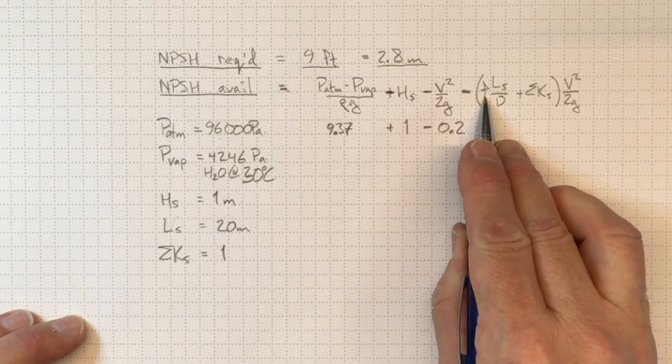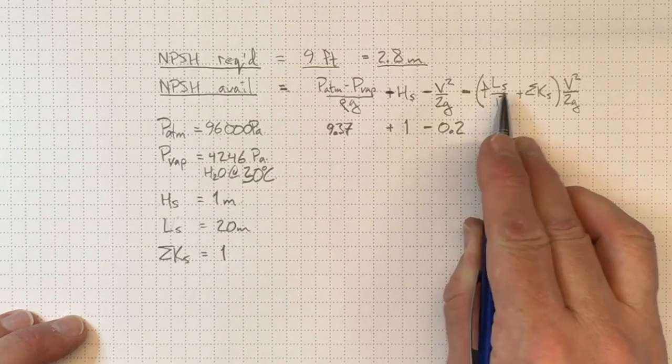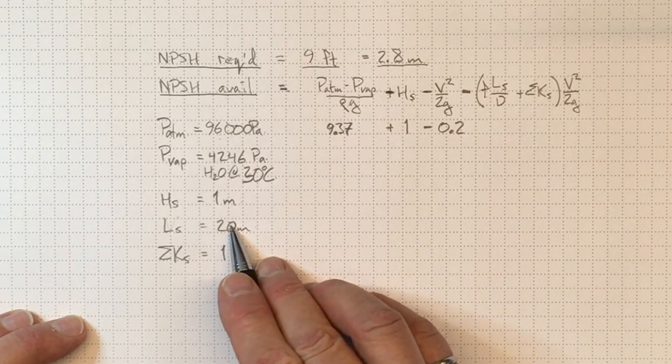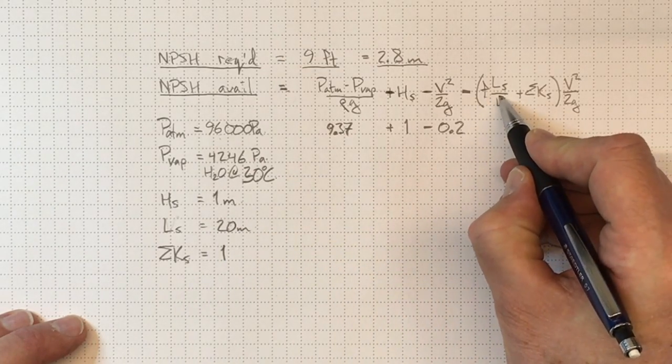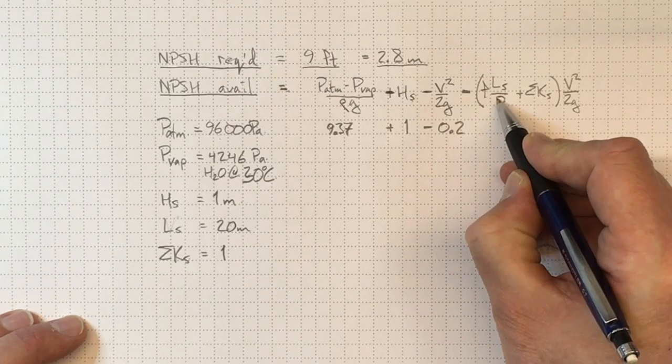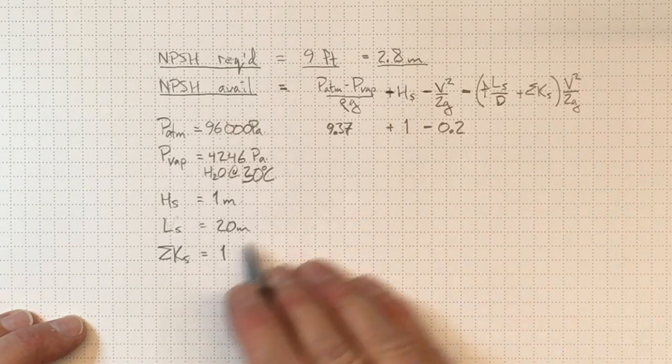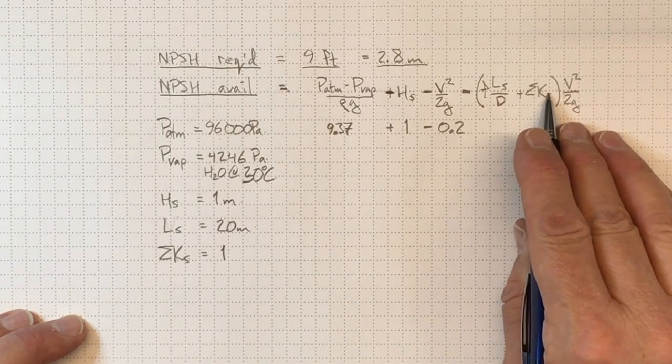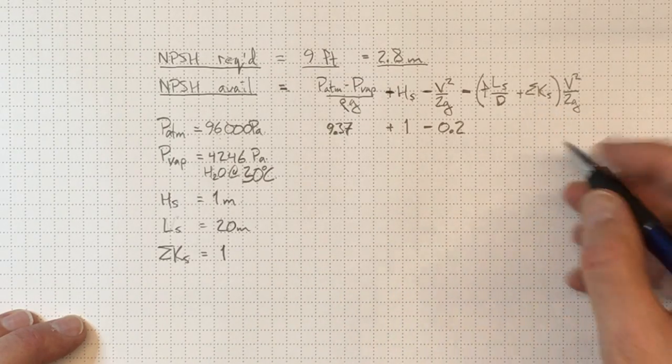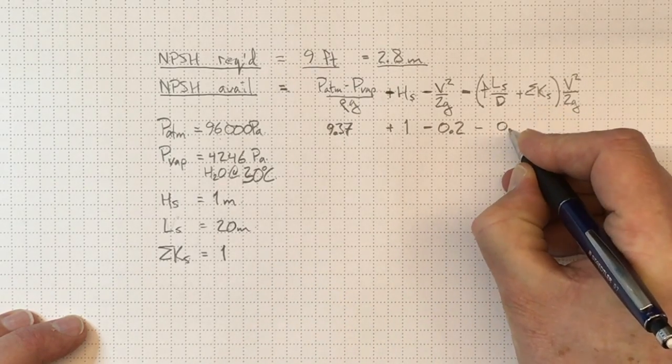And then when we take into account our friction losses for the friction factor and just the length in the suction side of the piping divided by D, and this is going to be lower losses because we've now gone up to the 8-inch pipe, and we've only got these K factors contributing to losses here, this amount will wind up being about 0.5.